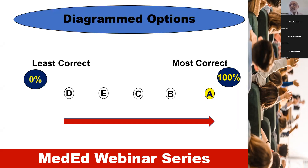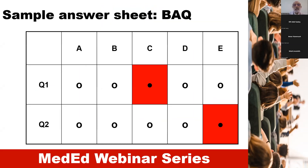Here is a diagrammatic representation of a BAQ where we have five options. All of them are correct, but one is the most correct, and that would be the key or answer to the question. This is the sample answer sheet, and in this type of question, students have to choose only one option which they think is the best item in that question.